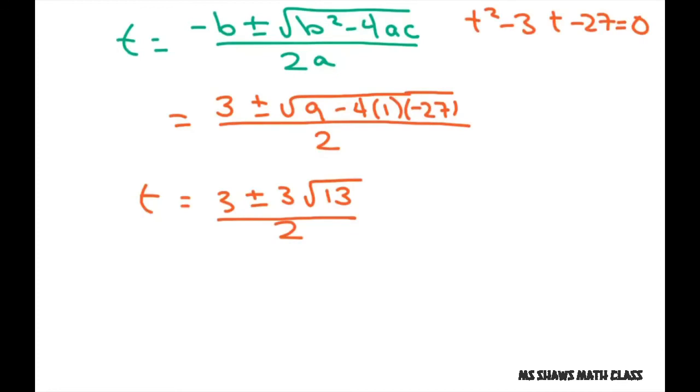Now we reject the solution that gives t is negative. So we're going to take the positive. So t is going to equal 3 times, I'm factoring out a 3, 1 plus square root of 13 divided by 2. And that's approximately 6.9 seconds. And that's it. Thank you. Have a nice day. Bye-bye.